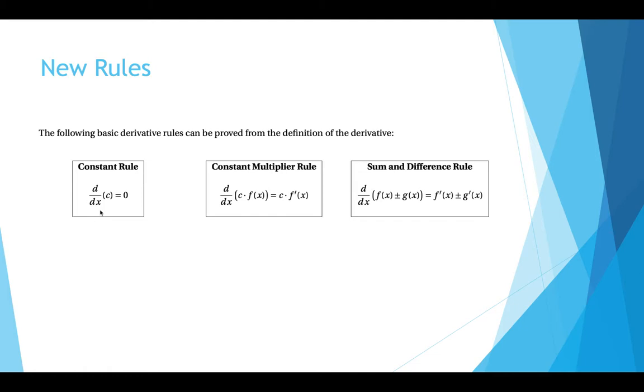The constant rule is that the derivative of a constant is 0. The constant multiplier rule is if you multiply a function by a constant, the derivative of the new function is that same constant times the derivative of the original function. And the derivative of the sum of two functions is equal to the sum of their individual derivatives.